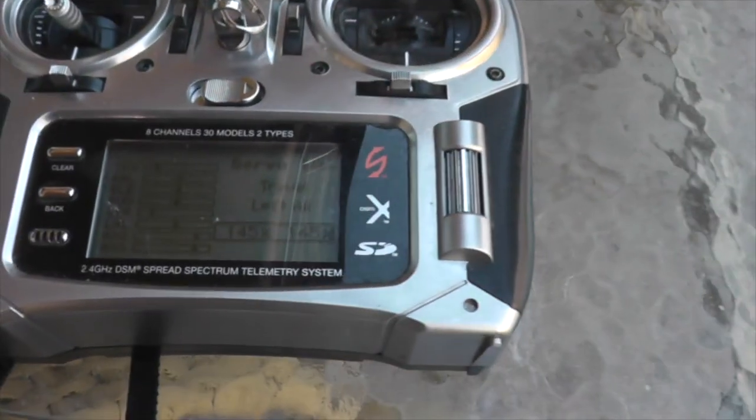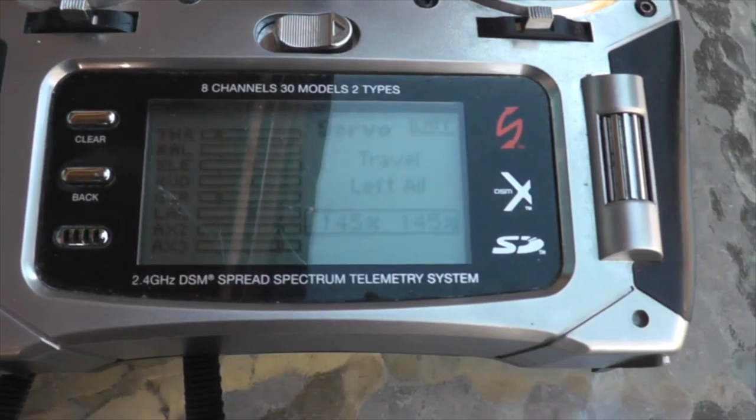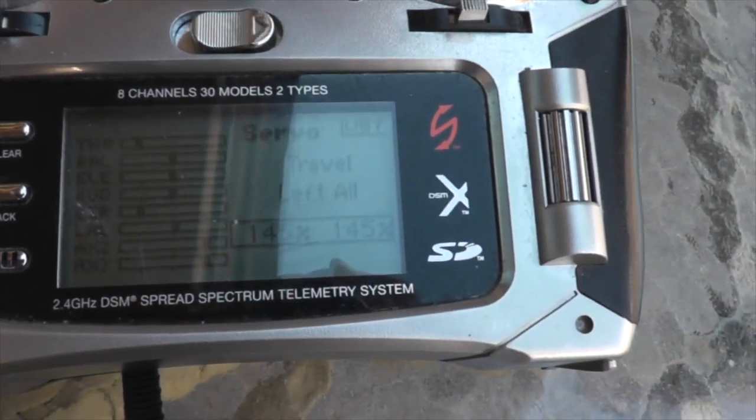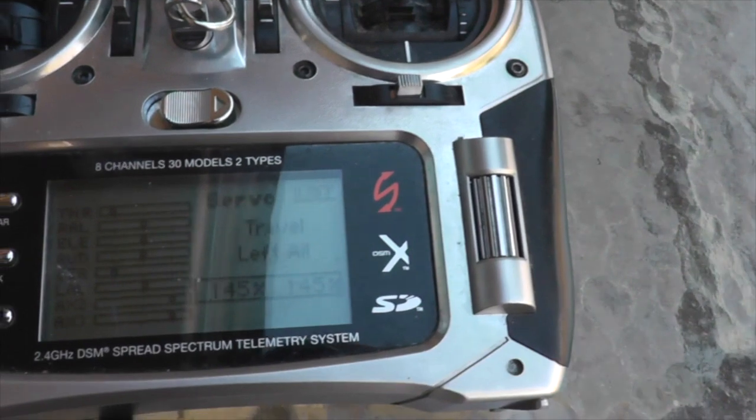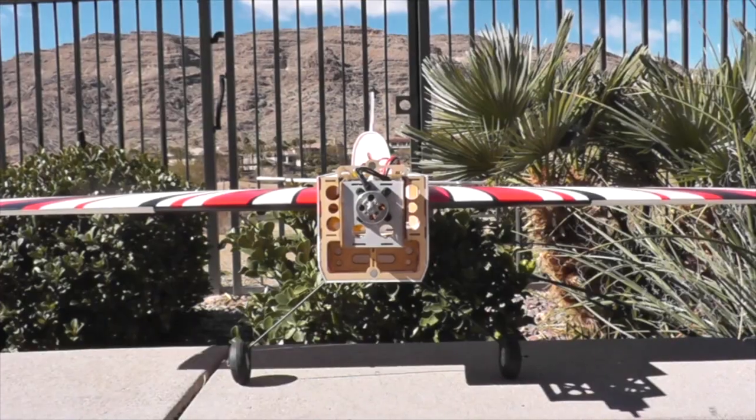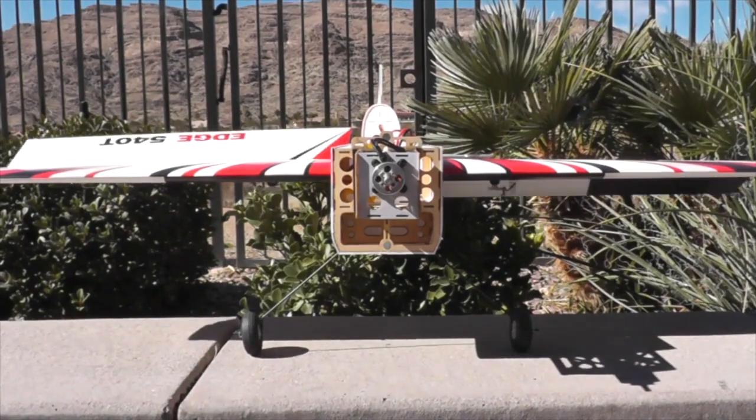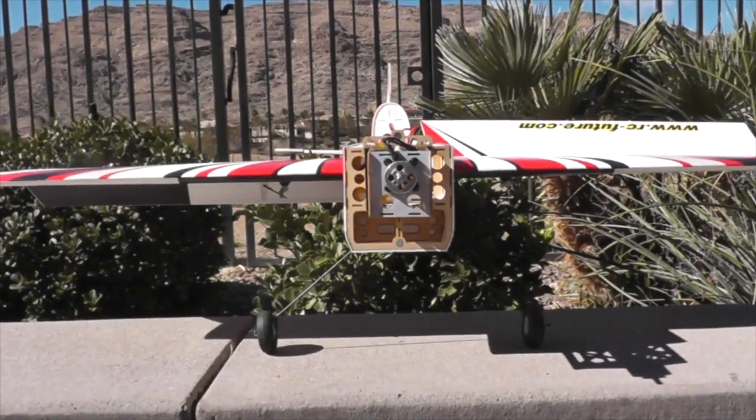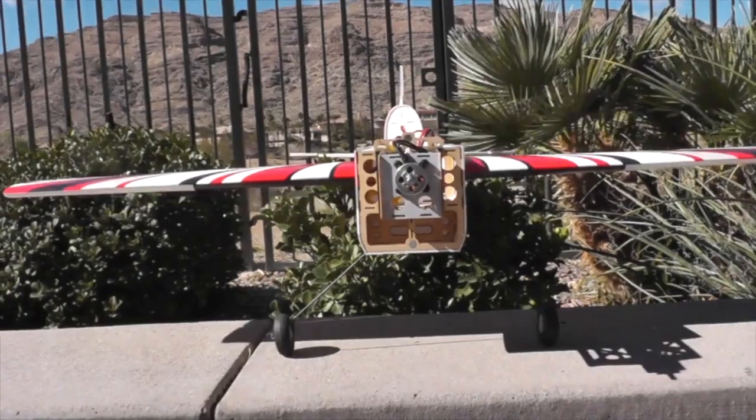I like the travel up above 125%. It just gives you a lot more torque and a lot more resolution on the stick, on the transmitter. So that looks good. Both ailerons are adjusted on the travel to 145%. Looks good, about equal travel in both directions.